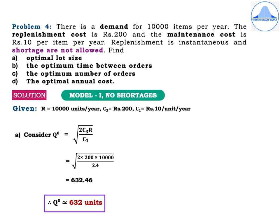Problem 4: There is a demand for 10,000 items per year. The replenishment cost is Rs.200 and the maintenance cost is Rs.10 per item per year. Replenishment is instantaneous and shortages are not allowed. Find the optimal lot size, the optimum time between orders, the optimum number of orders, and the optimal annual cost. Model 1 without shortages. Given: R = 10,000 units per year; C₃ = Rs.200; C₁ = Rs.10 per unit per year. Everything in this problem is given in terms of years.